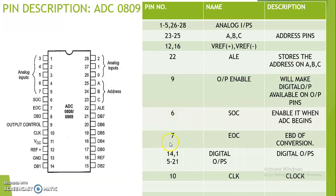Pin number 7 is called EOC, which stands for End of Conversion. The end of conversion is indicated by the EOC pin. Pin numbers 14 and 15 to 21 are all digital output pins, and the digital output is available on these pins. DB7 is the MSB of the digital output, and DB0 is the LSB. Pin number 10 is the clock, used as the clock signal. That was the pin description of ADC.